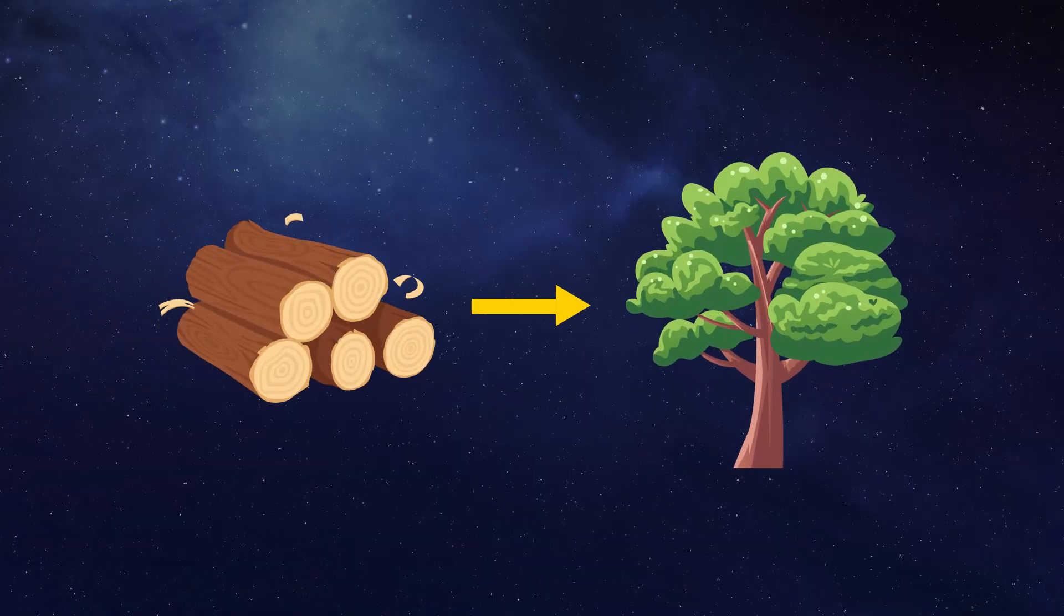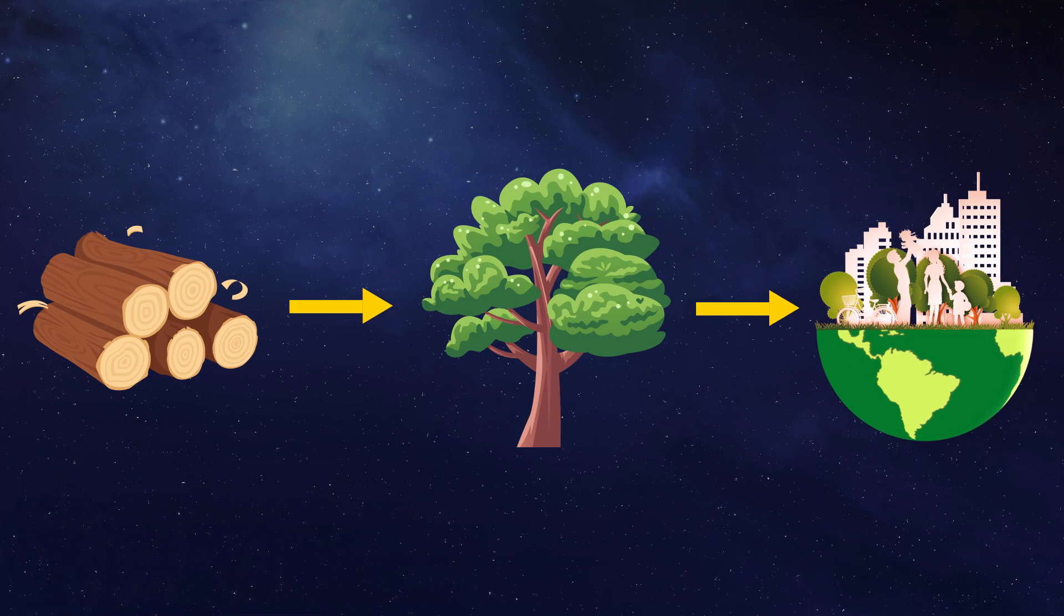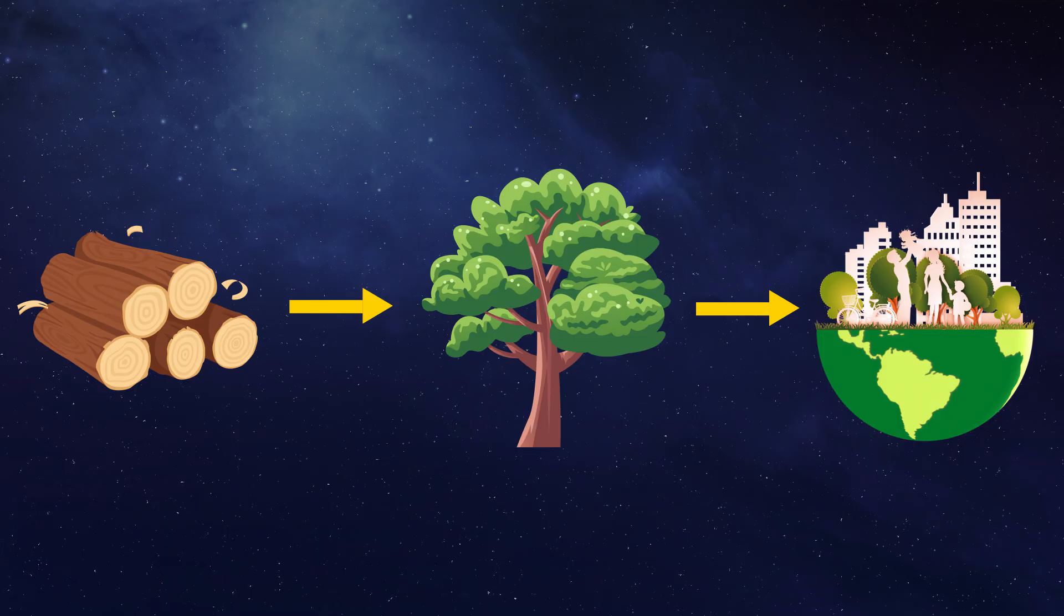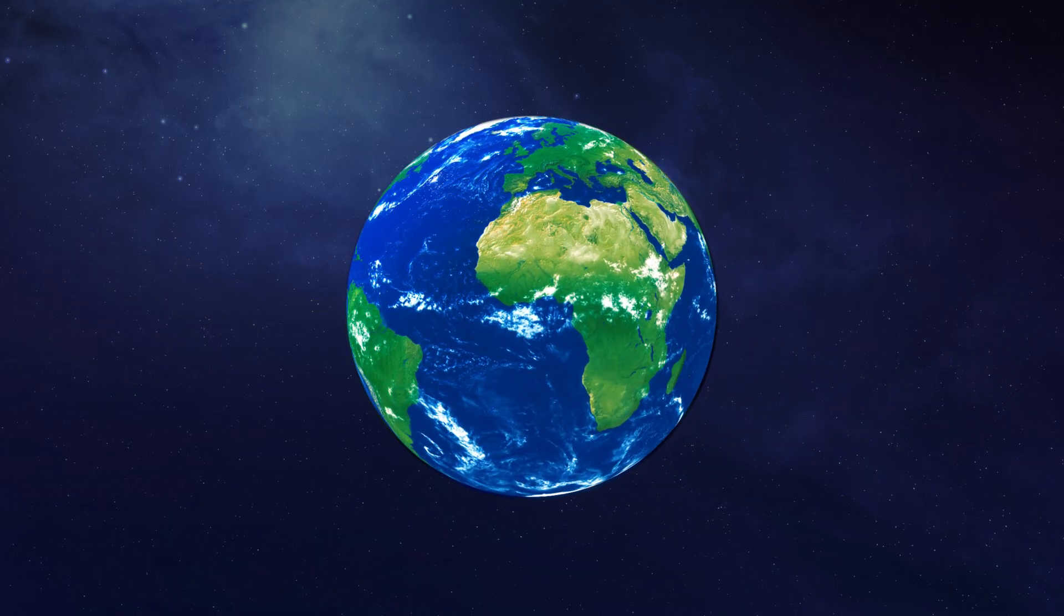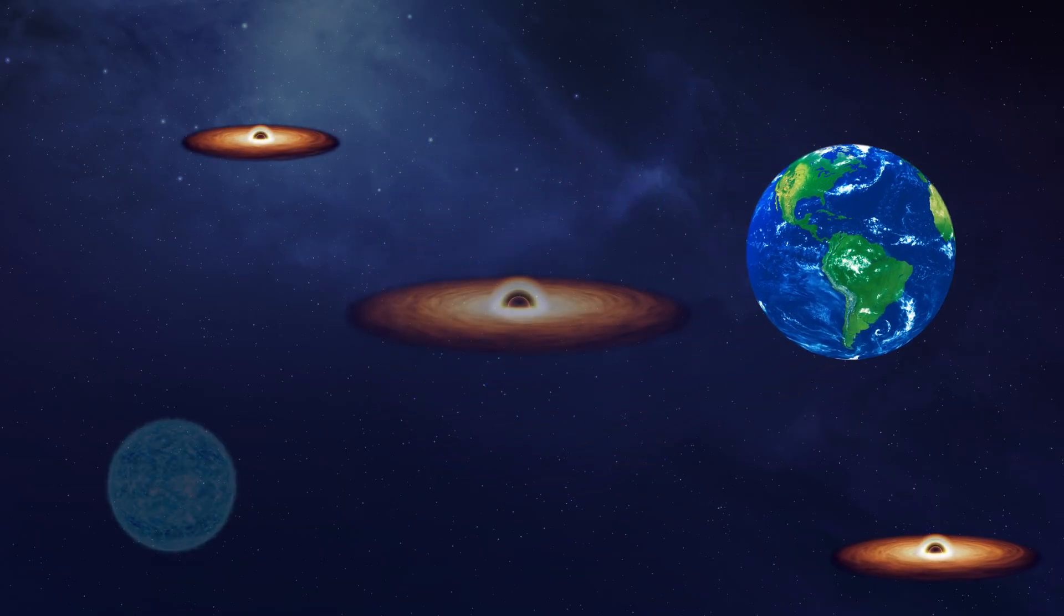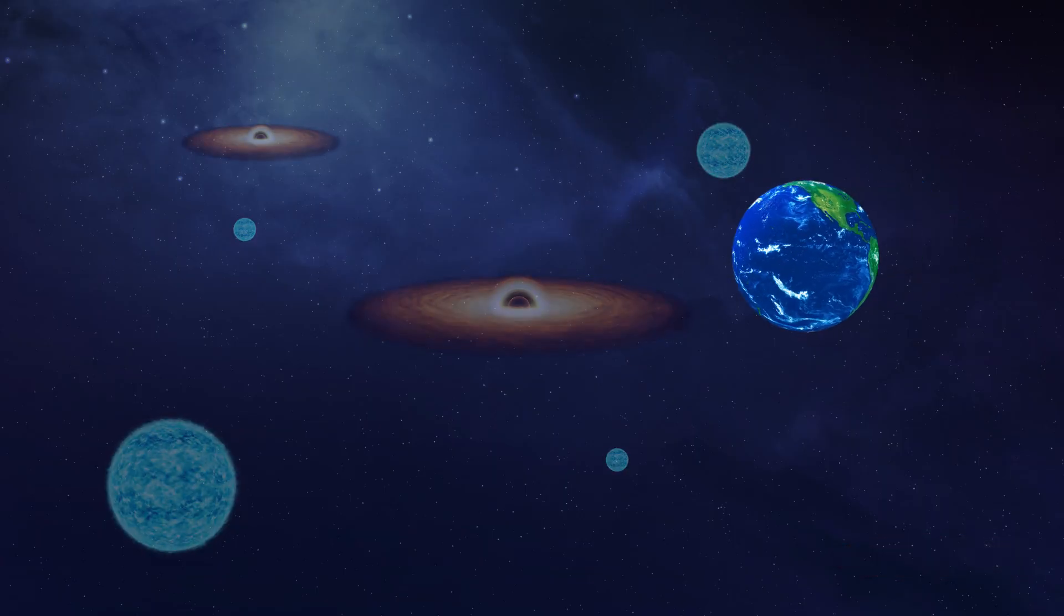Wood requires trees. Trees require planets with life. Life requires an extremely narrow set of cosmic conditions. And so far, out of everything we've seen in the universe, trees exist on exactly one planet: ours. Think of how rare that makes wood. We find black holes everywhere, neutron stars everywhere, planets everywhere. But wood? Only Earth has it.